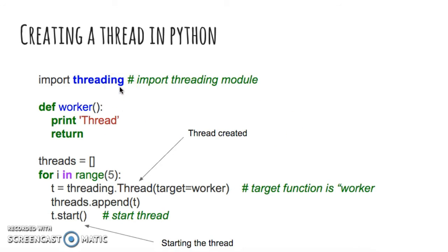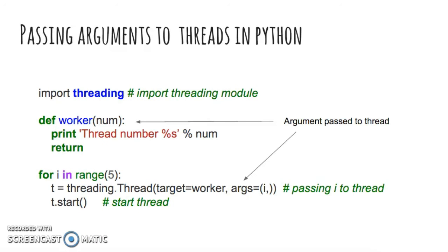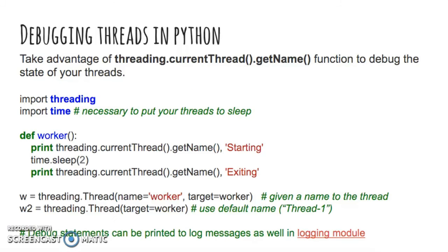Create a thread using threading's function and start the variable which corresponds to its own function. In this case, the thread t is created five times and runs the function worker. When spawning a new thread, arguments can be passed to the newly created thread. In this example, the thread's number is passed to the worker thread via the method arguments. As discussed before, multithreading can get quite messy, so take advantage of the threading.currentThread.getName function to debug the state of your threads.